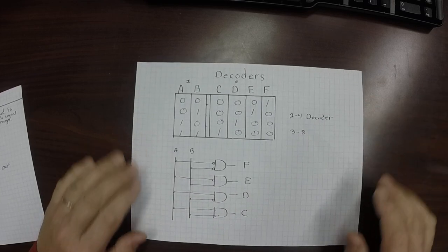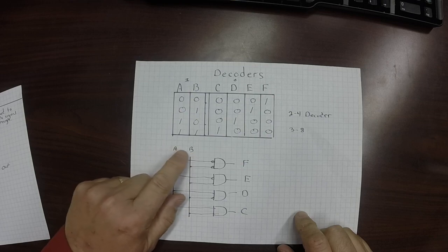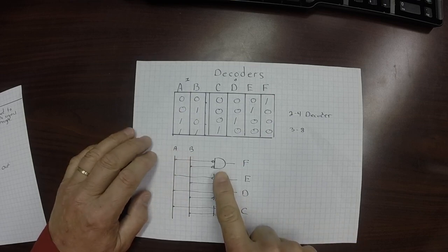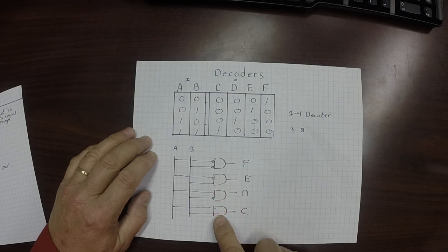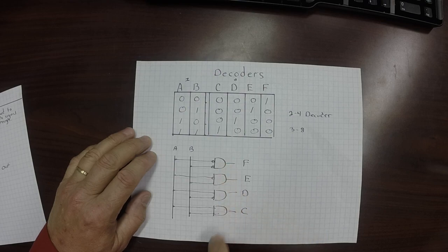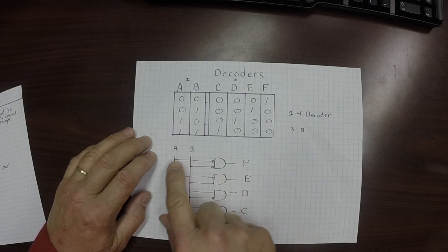In a decoder, what we have is two signals coming in, A and B. And what that does is it turns on an AND gate that says I want the signal 00 to come out, or I want 01 to come out, or I want 10 to come out, or 11 to come out. So it turns on an AND gate depending upon the selectors that are coming in.